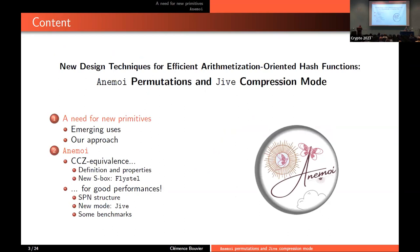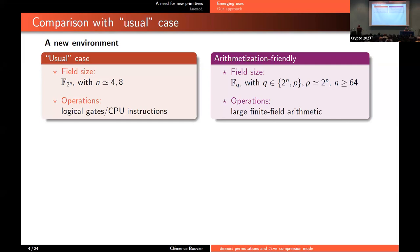Anemoi is a family of ZK-friendly hash functions. Before presenting it, I want to recall the background, because what I'm presenting is really different from what we're used to in symmetric cryptography. In recent years, there is a new trend to design symmetric primitives for advanced protocols such as zero-knowledge protocols. First, we're working in a new environment: instead of small fields like F2 to the N where N is 4 or 8, we now need to work in large finite fields FQ where Q is either a large prime or a large power of 2.